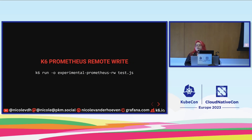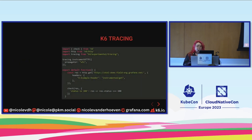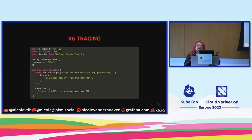K6 can also send test results to Prometheus via remote write, just by adding an output flag — so you can get protocol and browser-level metrics going to the same place. And if you've instrumented your system already, the K6 tracing module lets you instrument HTTP headers as well, starting traces from the test level itself.